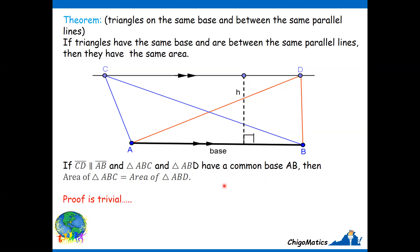So as such, to prove this, it is a trivial effort. Why? Because to find the area of each triangle, we use the formula half base times height. But here, the base is the same, the height is the same. So there's no way we can get something different.